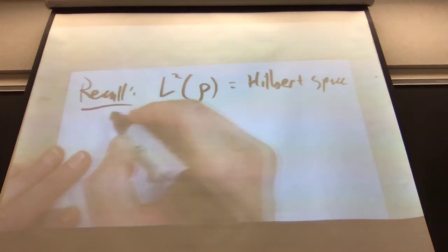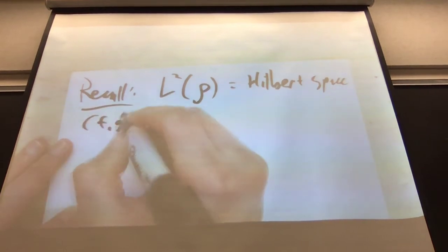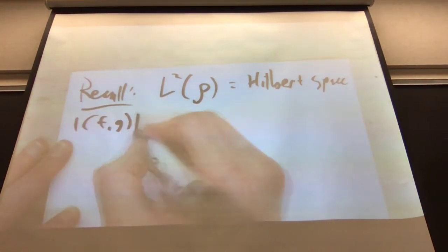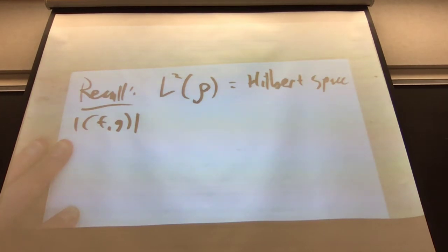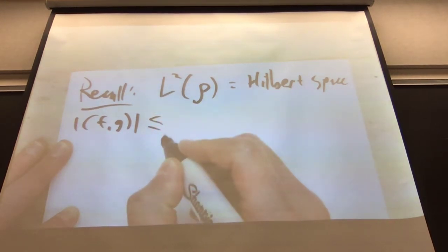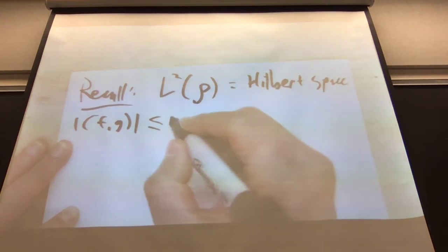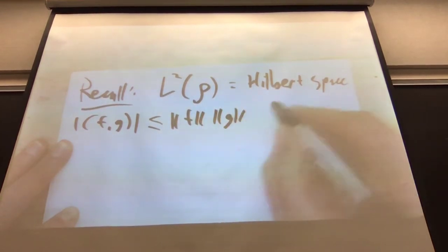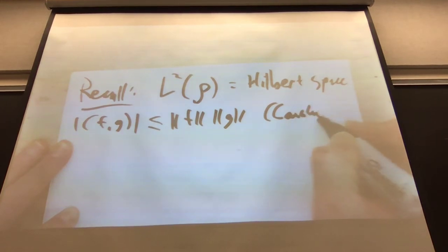What does that mean? It means we have an inner product, F and G. Why is that inner product well-defined if two things are in L2? You multiply F times G bar — Cauchy-Schwartz. Yes, Cauchy-Schwartz.